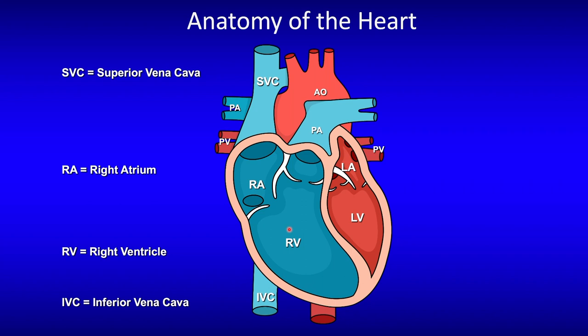From there, the Ventricle contracts, Blood pushes through the Pulmonic Valve into the Pulmonary Artery, and from the Pulmonary Artery, Blood goes to the Lungs for Gas Exchange.